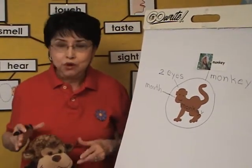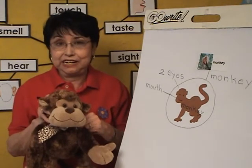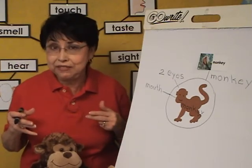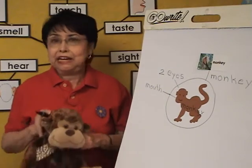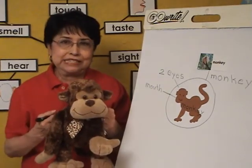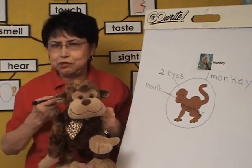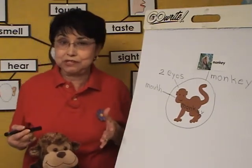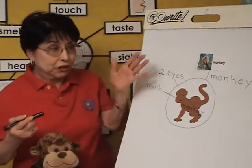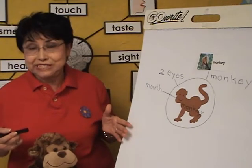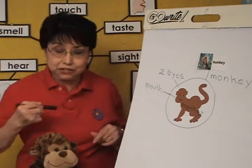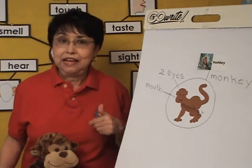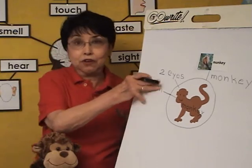Do you see what I'm trying to do? I'm gathering background knowledge from the children using my novelty — whether it's the stuffed animal or the headband. I'm finding out what they know. Even if they don't have direct experience with a monkey, just by looking at it they can tell me what they see and relate to it. After we talk about it for about five to six minutes, I continue to write words as they continue to give me more vocabulary.